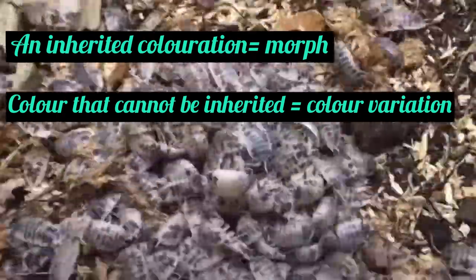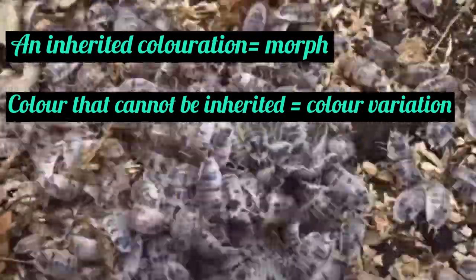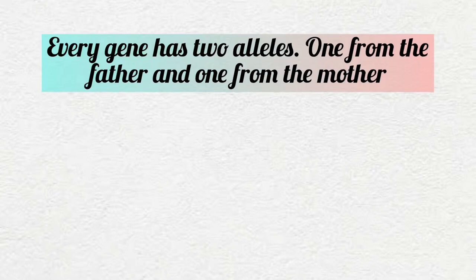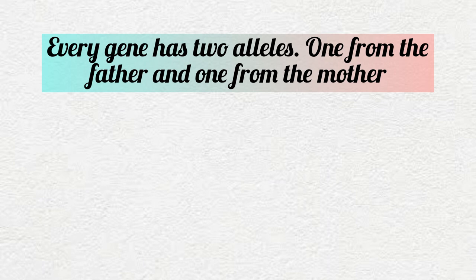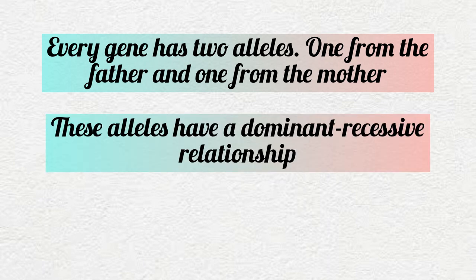To understand how morphs work we have to learn a little bit about genetics. Every organism has two alleles for each gene, one inherited from their mother and one inherited from their father. These alleles have a dominant and recessive relationship. This means that one allele, which is the dominant one, expresses over the other allele, which is the recessive one.